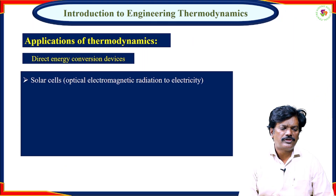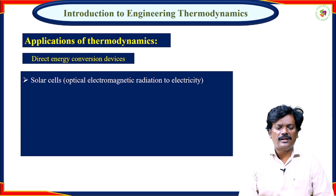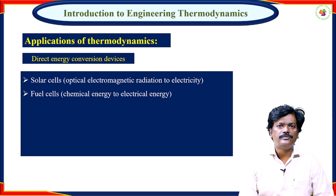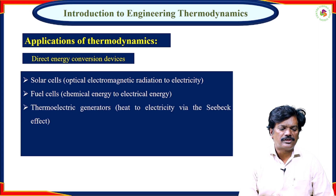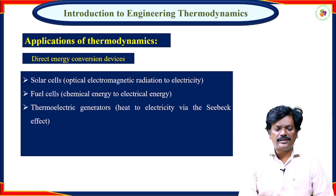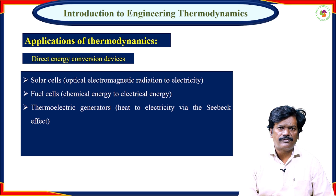Thermodynamic principles are used in direct energy conversion devices such as solar cells, in which optical electromagnetic radiation is converted into electricity, and fuel cells, in which chemical energy is transformed into electrical energy. Thermoelectric generators also use these principles, converting heat energy into electricity via the Seebeck effect.